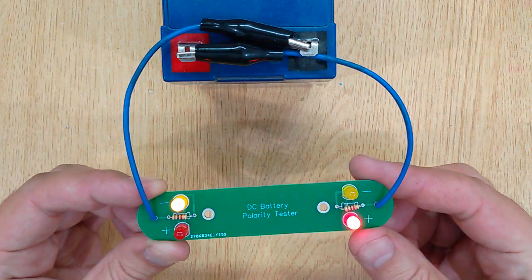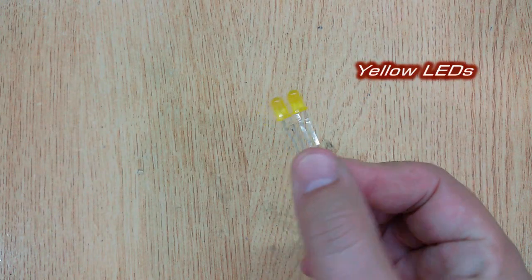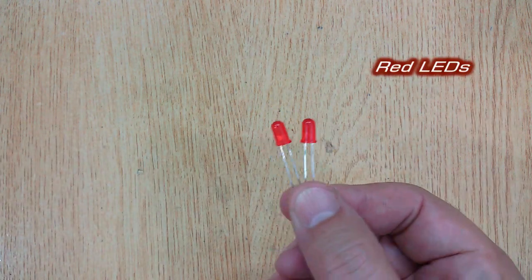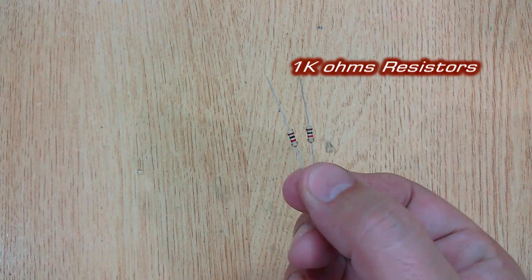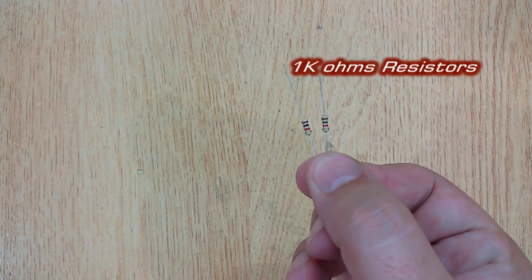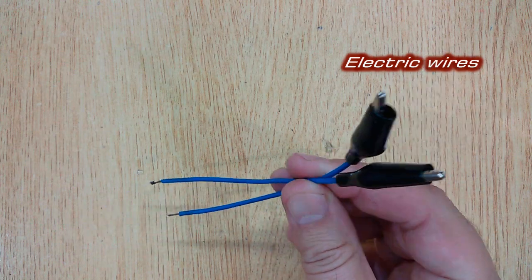For this electronic project, you will need: yellow LEDs, two pieces; red LEDs, two pieces; resistor 1K ohms, two pieces; and electric wires with alligator clips, two pieces.